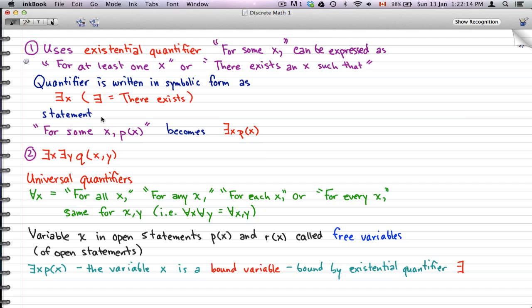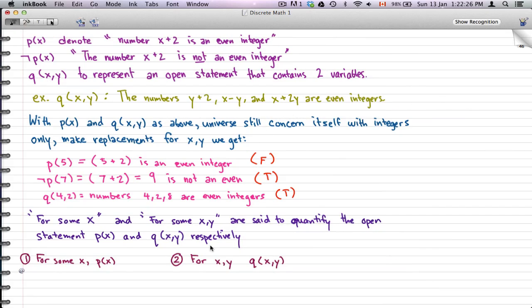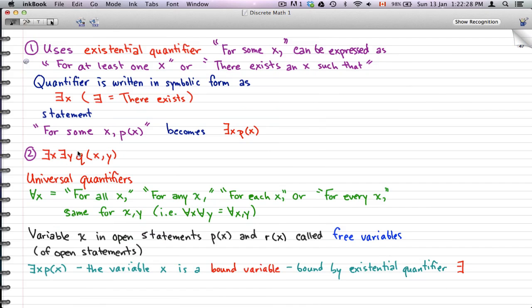...was for x,y, Q(x,y). We pretty much just replace it with ∃x and ∃y. For 'for some x,y, Q(x,y),' there's not much to describe here.